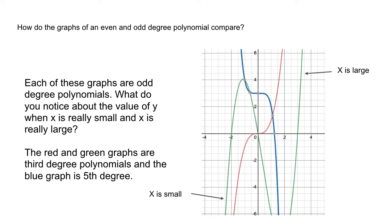When x is small, y is in the negative values, and as x gets larger and continues to get larger, then the y values become positive. In the blue graph it's the reverse. When x is small, y is positive, yet it gets smaller and ends up in the negatives when x is very large. That's what happens when we have odd degree polynomials.